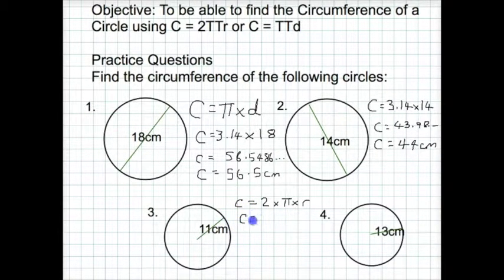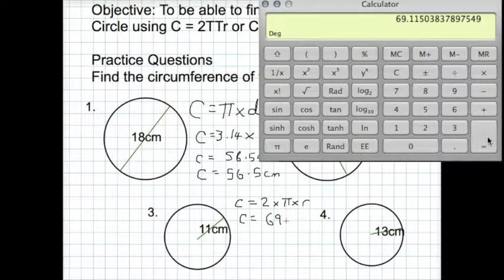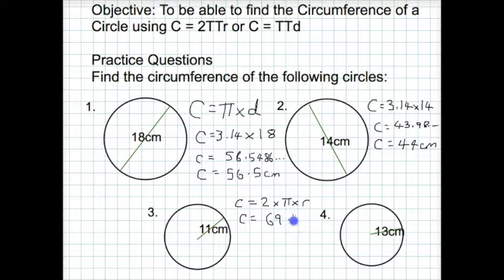We type that in our calculator. C = 2πr is going to give us a value of 69.11503. It continues on. If we round this to one decimal place, we get 69.1 centimeters.